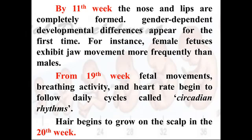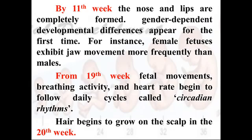From the nineteenth week, fetal movements, breathing activity, and heart rate begin to follow daily cycles — known as circadian rhythms. The wonderful hair that you care for with shampoo, conditioner, serum, etc. begins to grow on the scalp in the twentieth week only. Prior to twenty weeks, the fetus is completely bald. These things which you cherish most are a gift from your mother in the twentieth week of prenatal development.